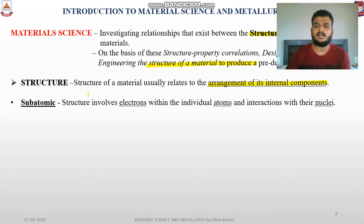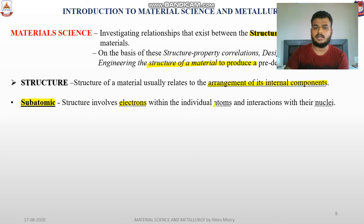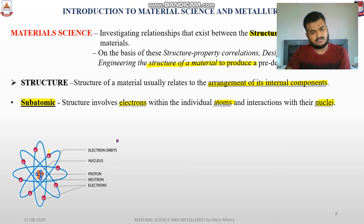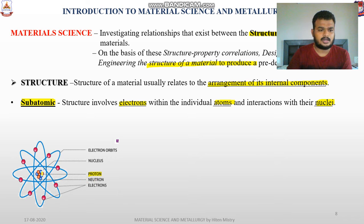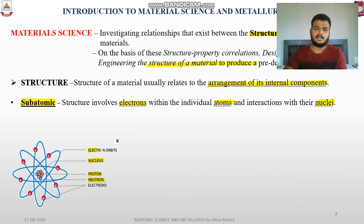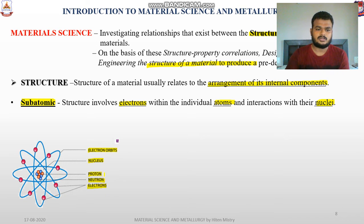The first subdivision is subatomic. The subatomic structure involves electrons within the individual atoms and their interaction with the nuclei. As we studied in school, in the figure shown, the center portion has protons and neutrons forming the nucleus. The electron is orbiting around the nucleus. These are the electrons. Proton is of positive charge.